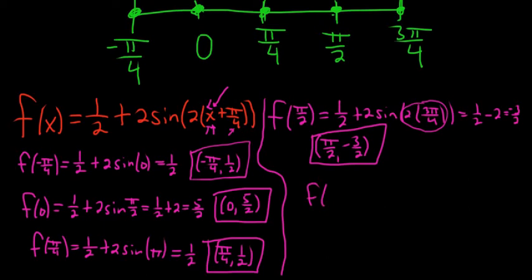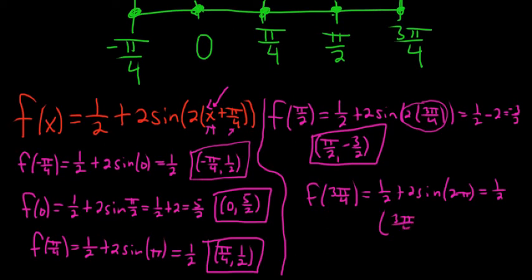The last one is f(3π/4). So f(3π/4) is 1/2 plus 2 sine of 2·(3π/4 + π/4). 3π/4 plus π/4 is 4π/4, which is π, times 2 is 2π. Sine of 2π is 0, so we just get 1/2. The ordered pair is (3π/4, 1/2).